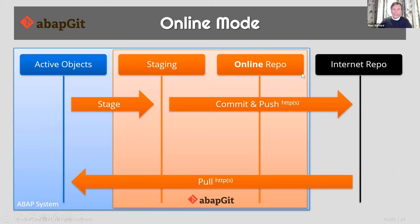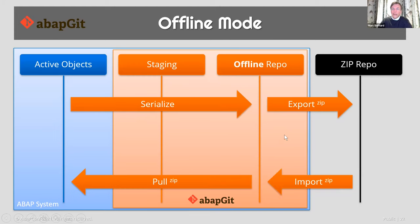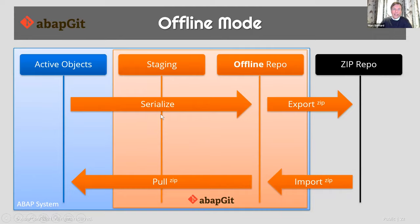If you want to contribute, you make changes and commit them back to the remote side. So this is basically how ABAPGIT works. In online mode, you use pull and then stage and commit via the HTTP connection. There's also an offline mode — it works very similarly, but instead of HTTP we have an exchange of zip files between the repository and ABAPGIT.